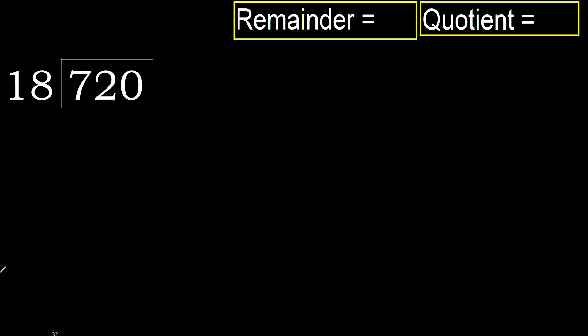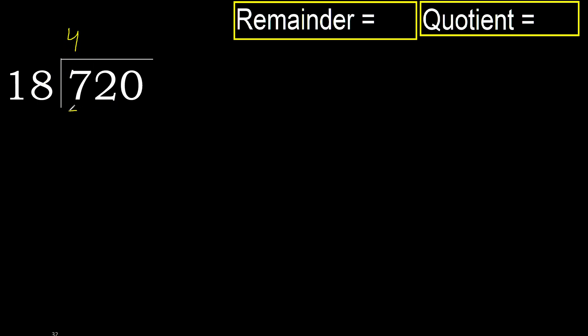720 divided by 18. 7 is less, therefore next. 72 is not less, so with 72: 18 multiplied by which number is nearest to 72 but not greater? 18 multiplied by 5 is greater. 18 multiplied by 4 is 72, which is not greater — ok.